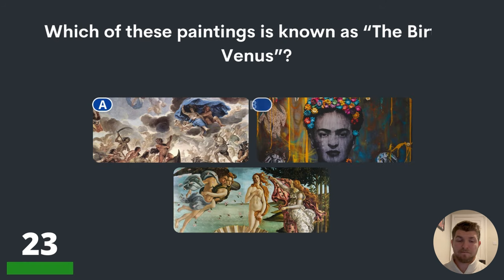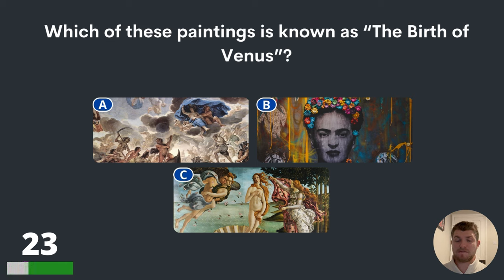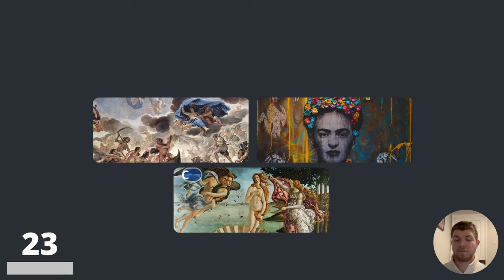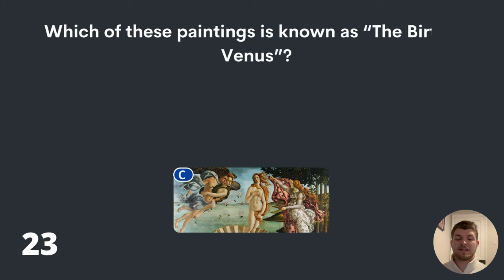Question twenty-three. Which of these paintings is known as the Birth of Venus? A, B or C? Have a little look at your screen and see which of those you think is called the Birth of Venus. The answer is C.